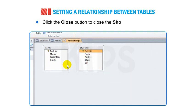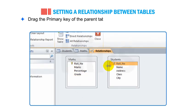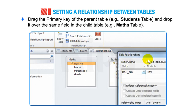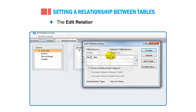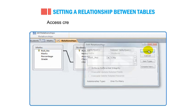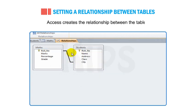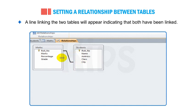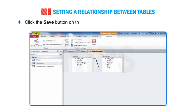Click the Close button to close the Show Table dialog box. Drag the primary key of the parent table (e.g., Students Table) and drop it over the same field in the child table (e.g., Maths Table). The Edit Relationships dialog box appears. Click the Create button. Access creates the relationship between the tables. A line linking the two tables will appear indicating that both have been linked. Click the Save button on the Quick Access Toolbar to save the relationship.